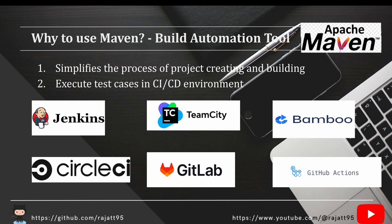When working on test cases for web, mobile, or REST APIs, the end goal is to execute those test cases in a CI/CD environment, not just on a local machine. The automated test code has to be in a code repository like GitHub or Bitbucket. That code gets picked up by a CI/CD tool and the test cases are executed in the pipeline. Previously people used Jenkins, Team City, and Bamboo, but now CircleCI, GitLab, and GitHub Actions are very powerful CI/CD tools.